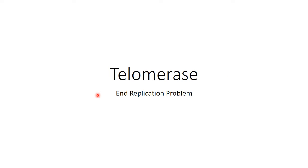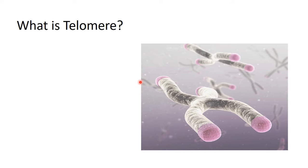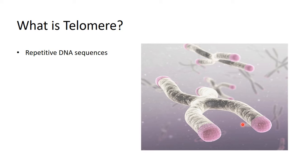First of all, in order to understand this, we should understand the telomere. The telomere is this cap at the end of the chromosome, which exists at each end of the chromosome. So it's a DNA sequence and it's a repetitive sequence of TTAGGG.